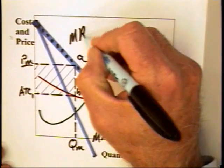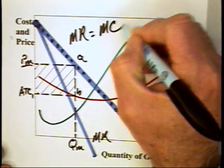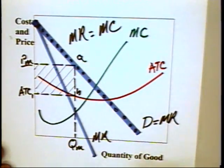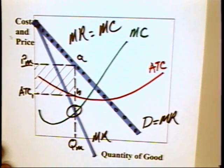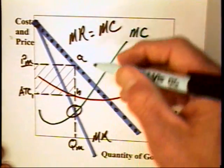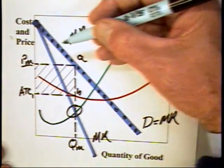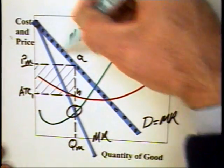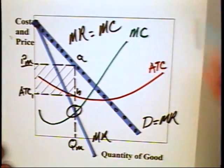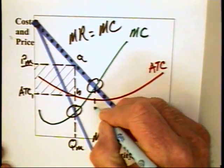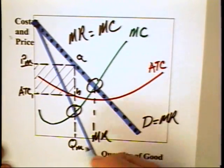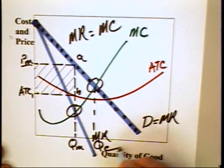We've always said that the firm ought to equate marginal revenue with marginal cost. When it's charging a constant price, this is where MC is equal to MR. But when it's charging different prices for each different unit, and the demand curve becomes the marginal revenue curve, then this becomes the profit maximizing point of production, which, as you will see, is equal to the competitive output level.